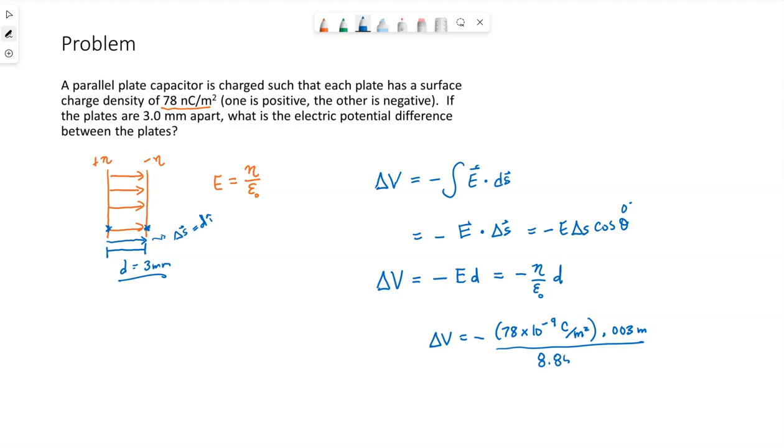Over epsilon naught is the 8.85 times 10 to the negative 12 coulombs squared over Newton meters squared. So plugging these in, I'm getting 26 negative.